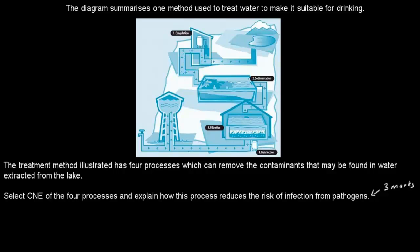The diagram summarizes one method used to treat water to make it suitable for drinking. The treatment method illustrated has four processes which can remove the contaminants that may be found in water extracted from the lake. And it says coagulation here, sedimentation here, filtration here,